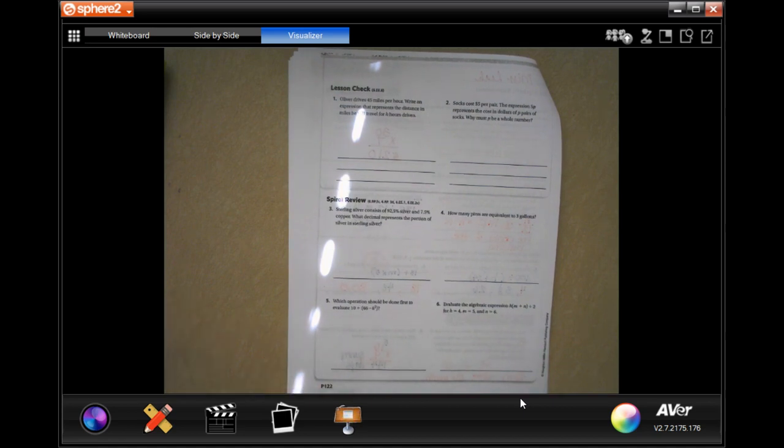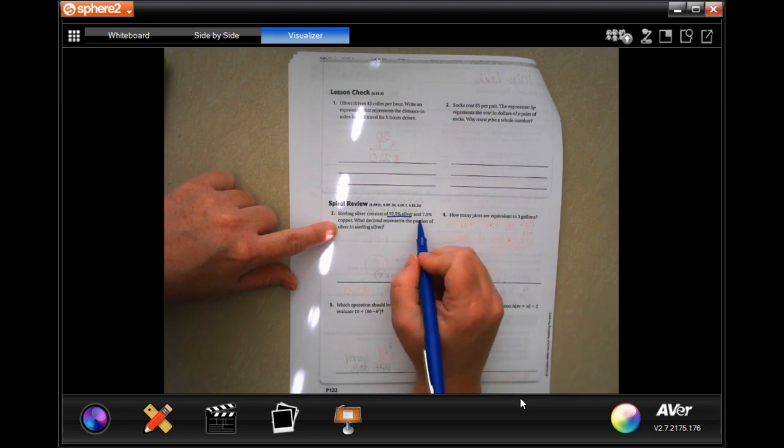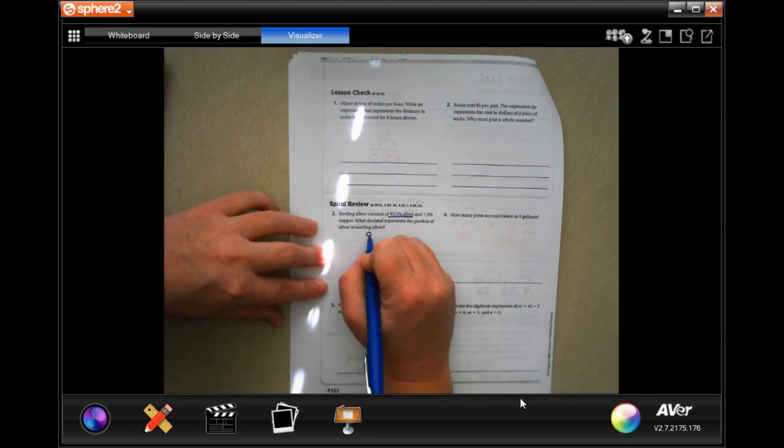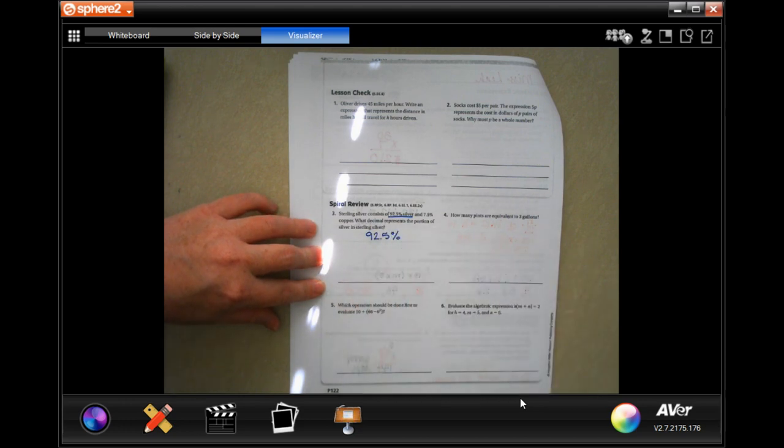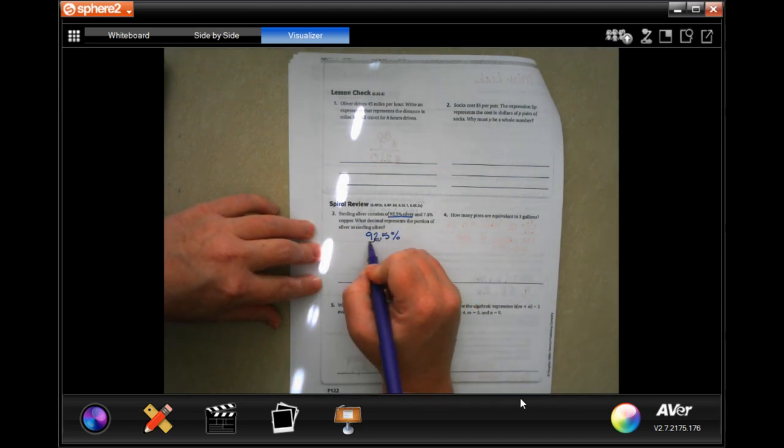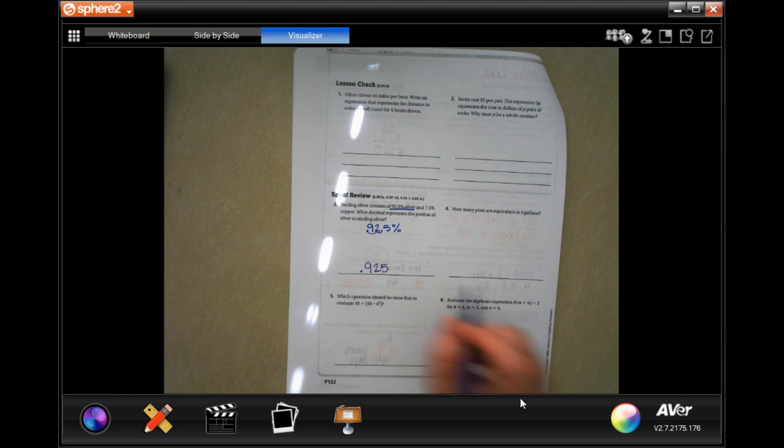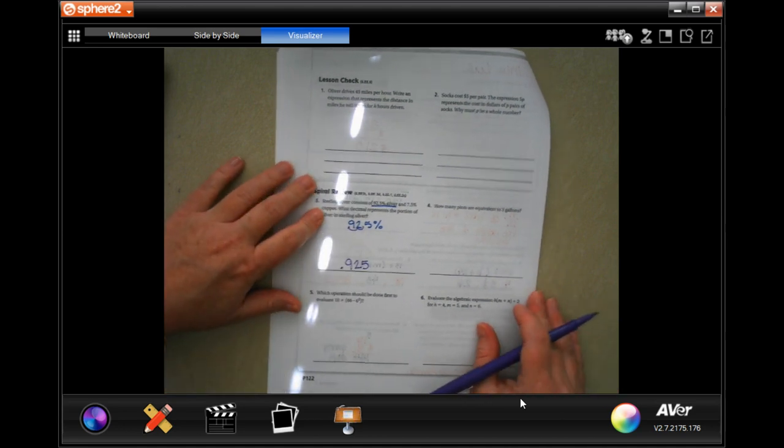So, it says sterling silver consists of 92.5% silver and 7.5% copper. So, what decimal represents the portion of silver in sterling silver? So, just this. It's giving us this information, but we don't need it. So, we have 92.5%, and we all know that when we are doing, going from a percent to just a decimal, we just move the decimal place two times. So, 0.925, and it doesn't give us a gram or anything like that, so it's just 0.925. You can put a zero in front of it if you want, it doesn't change it.